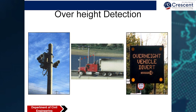Overheight vehicle divert uses overhead detection. In certain places, heavy vehicles are not allowed. When a heavy vehicle moves in that direction, an alarm warns the driver not to proceed because the vehicle exceeds the overhead clearance, and they must divert to a different direction.